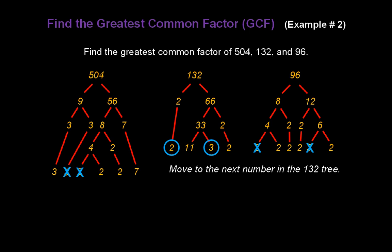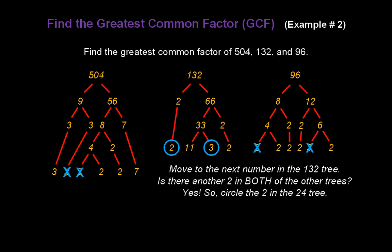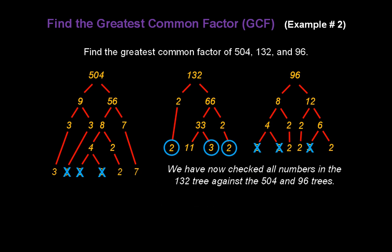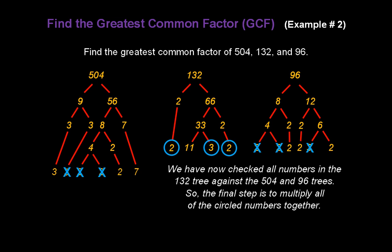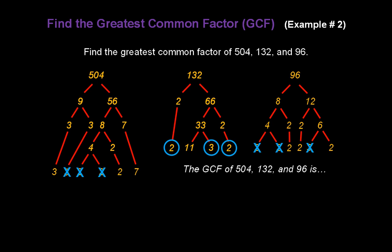Finally, move to the next number, which is also the last number in the 132 tree. It's a 2. Is there another 2 in both of the trees? Yes, there is another 2 available. So we're going to circle the 2 in the 132 tree and don't forget to cross out one 2 in each of the other trees. We've checked all numbers in the 132 tree against the 504 and 96 trees. So the final step is to multiply all circled numbers together. And the greatest common factor of 504, 132, and 96 is 2 times 3 times 2, or our answer is 12.